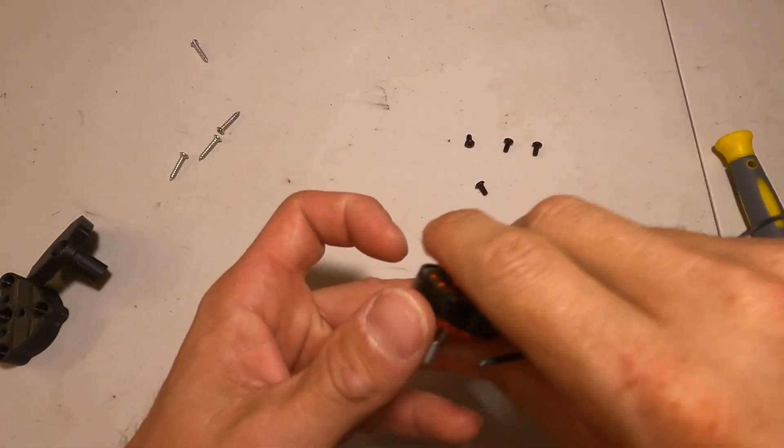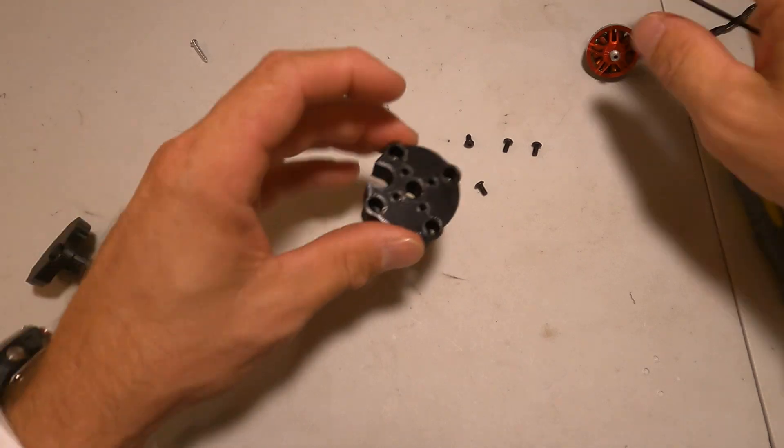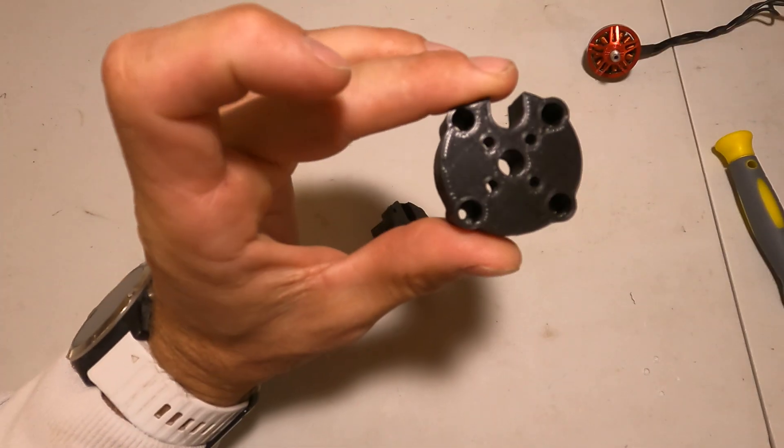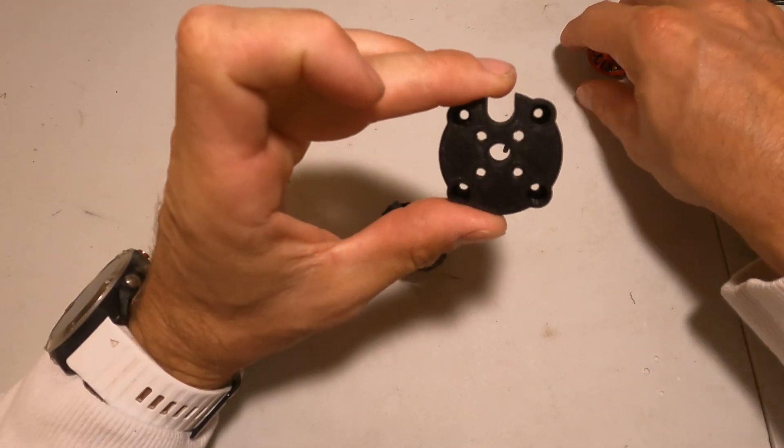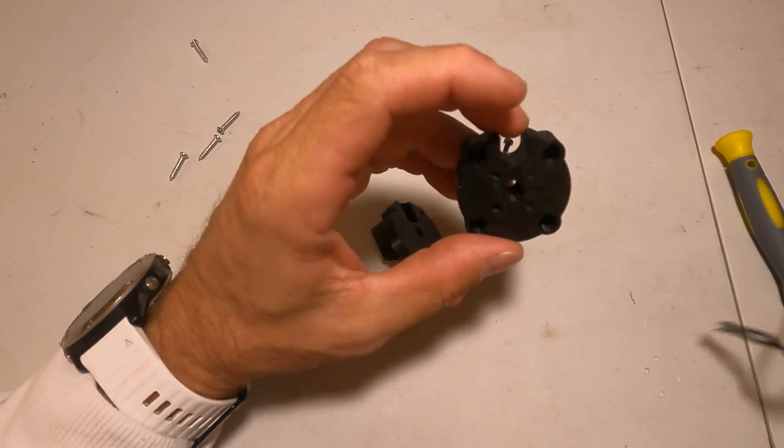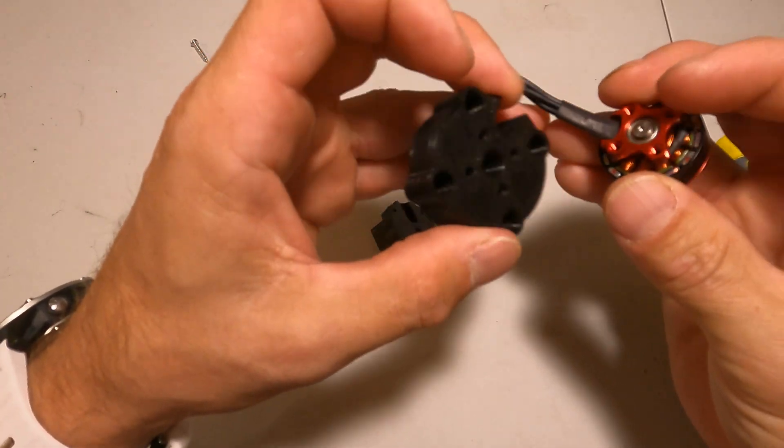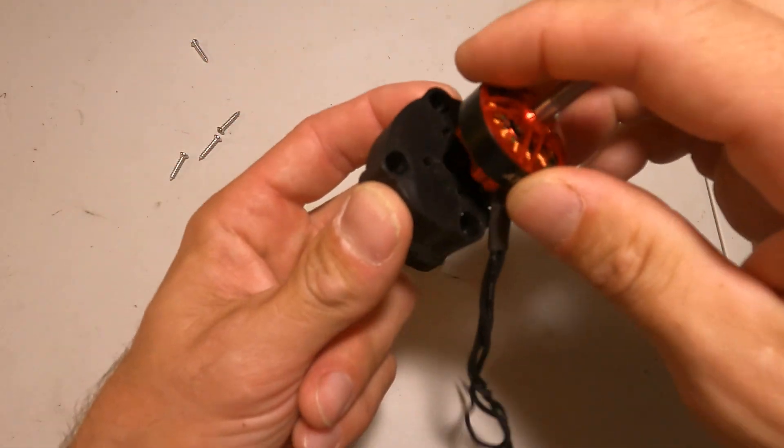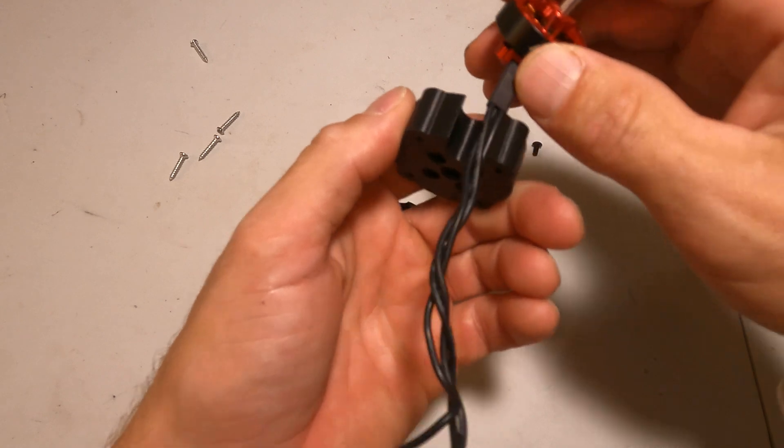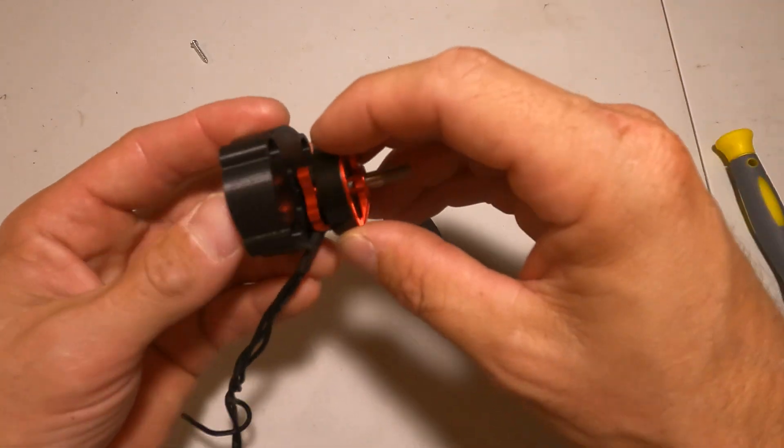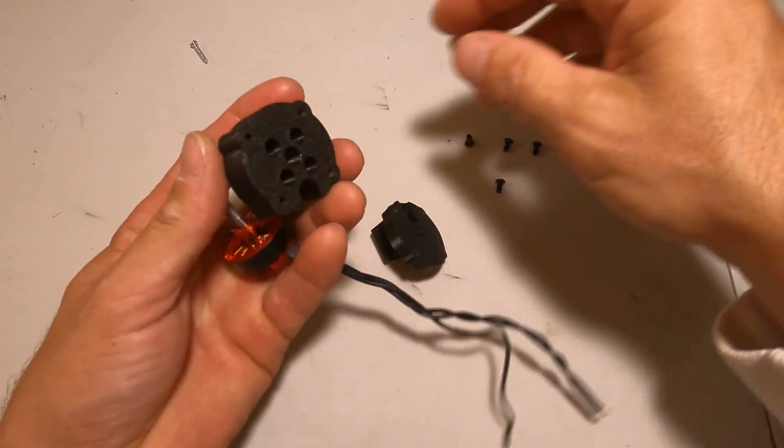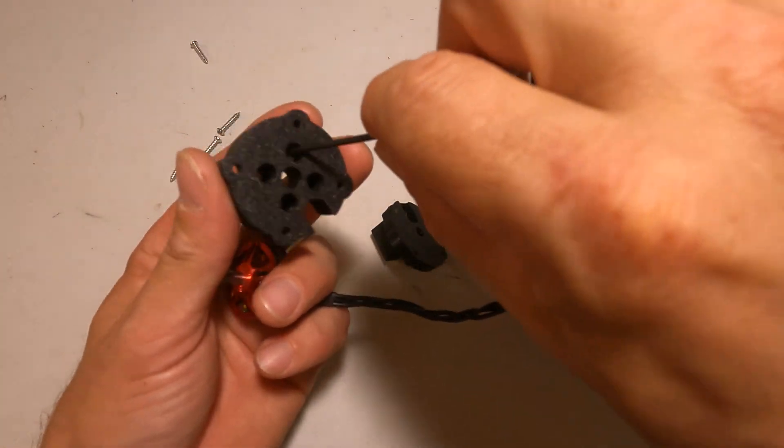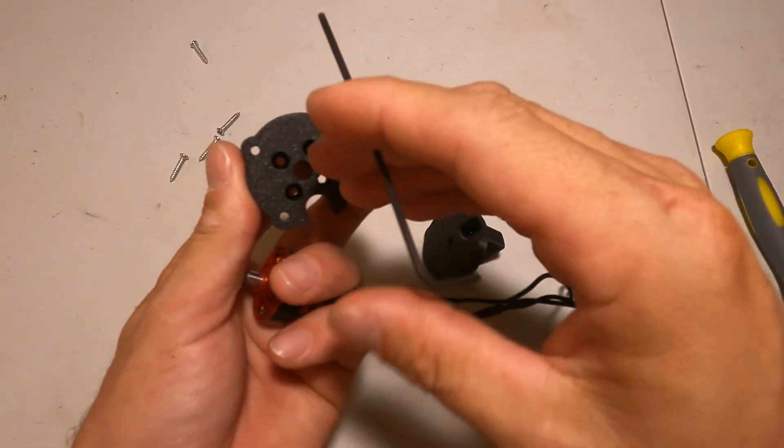Now we're going to take our kit and this is our adapter. What we're going to do is mount our motor on the adapter like so. The wires go in through this channel located right here.